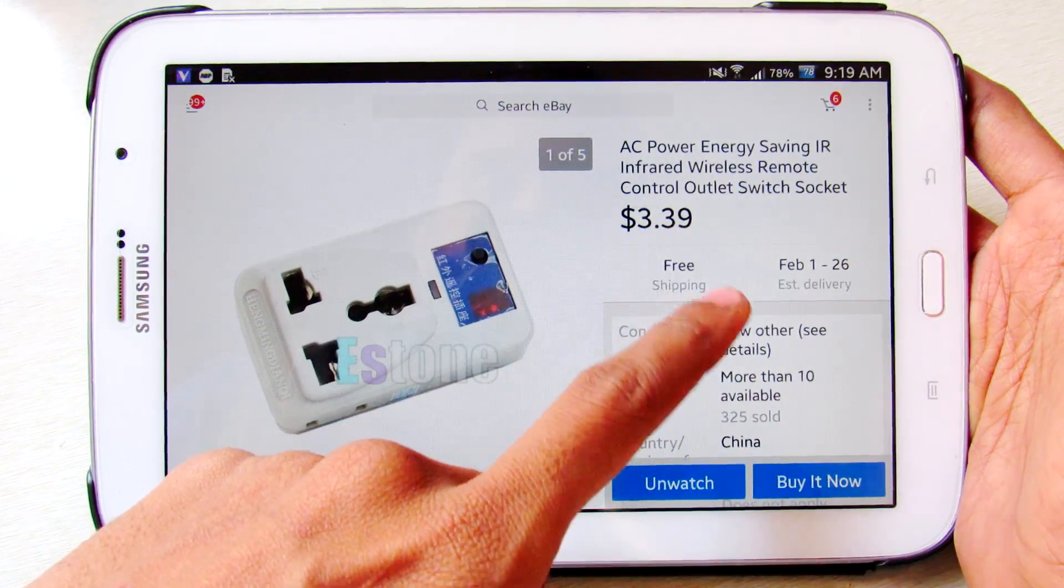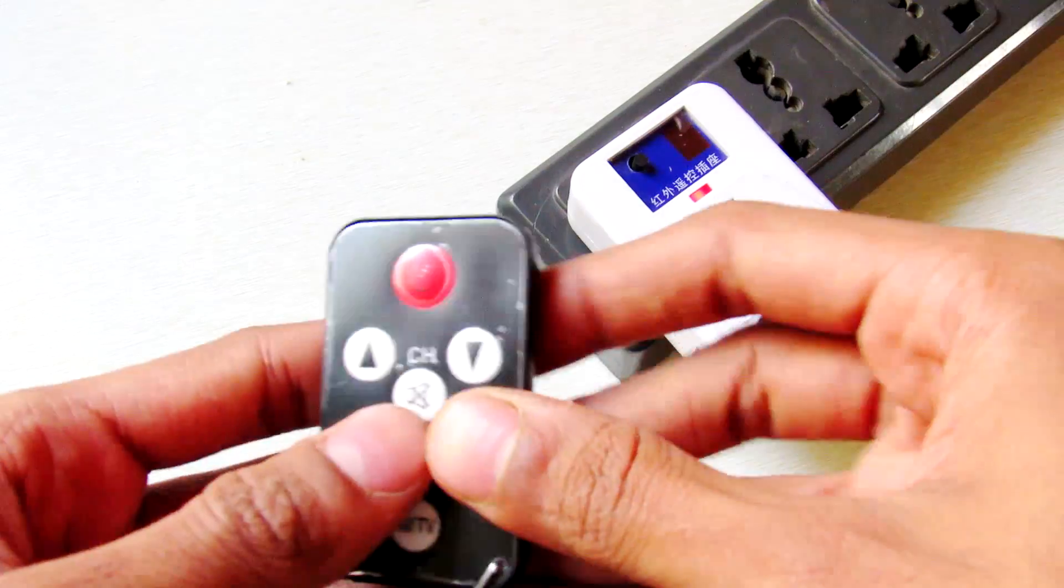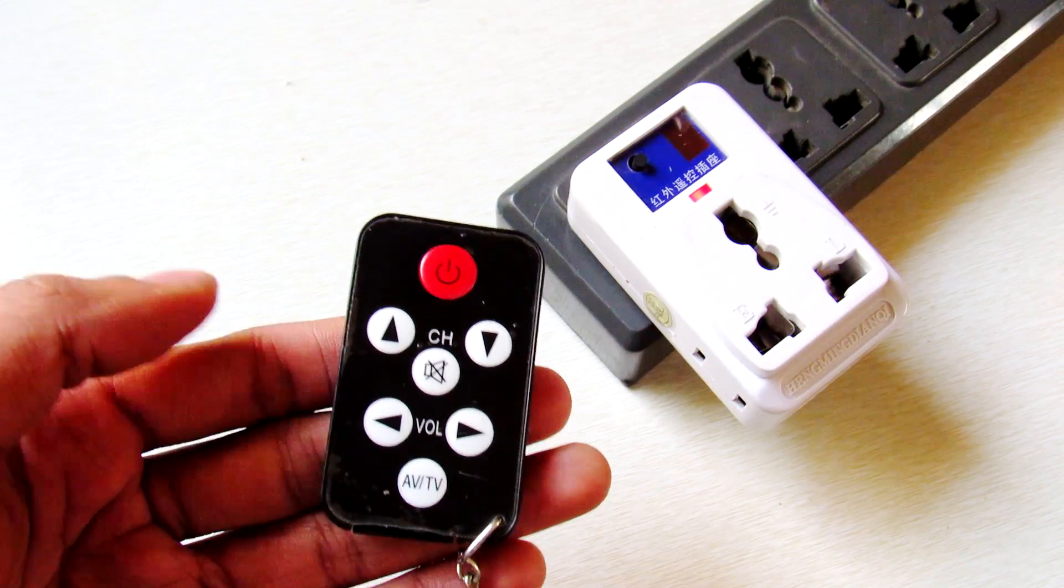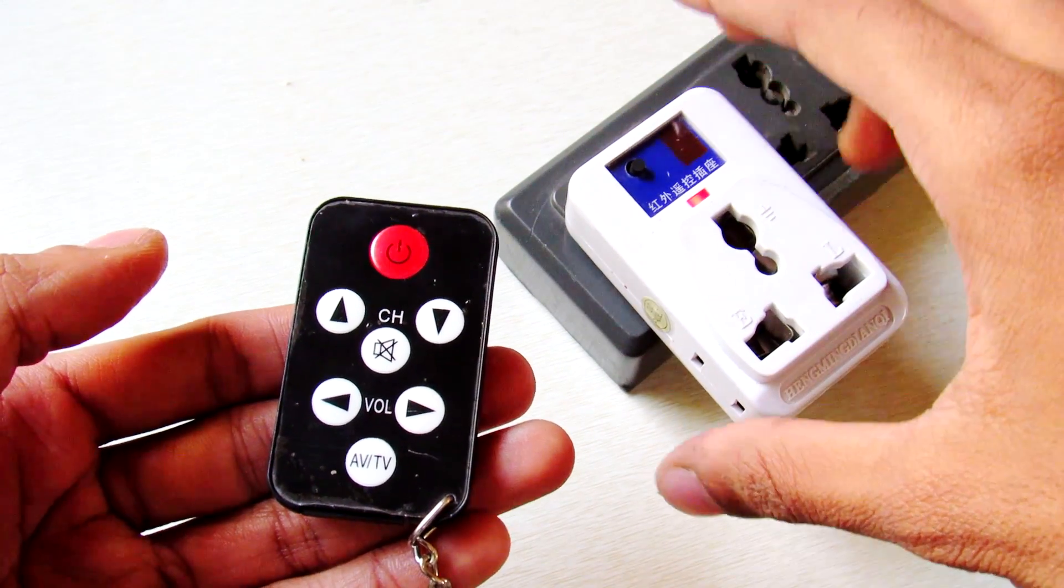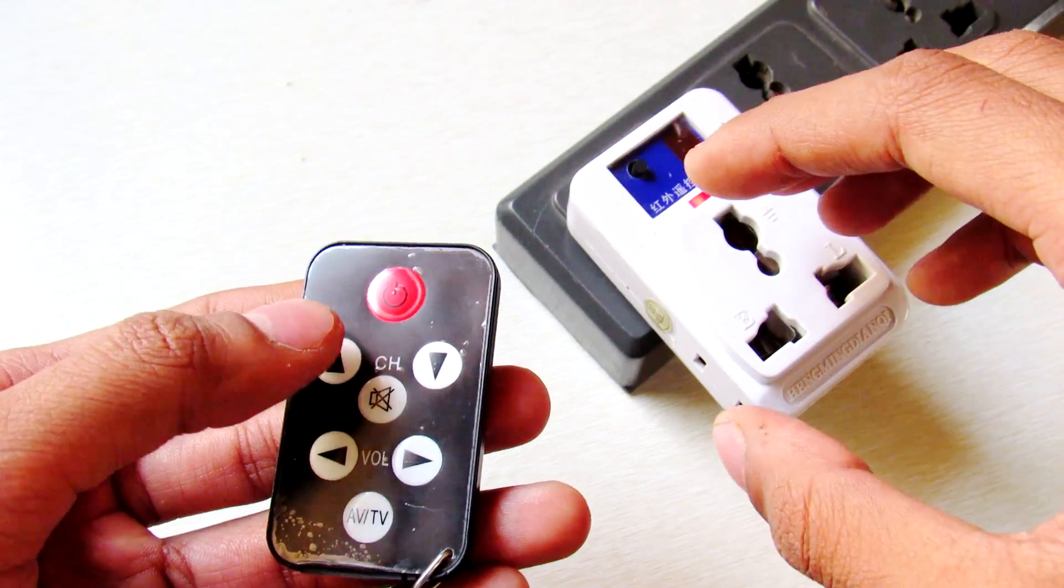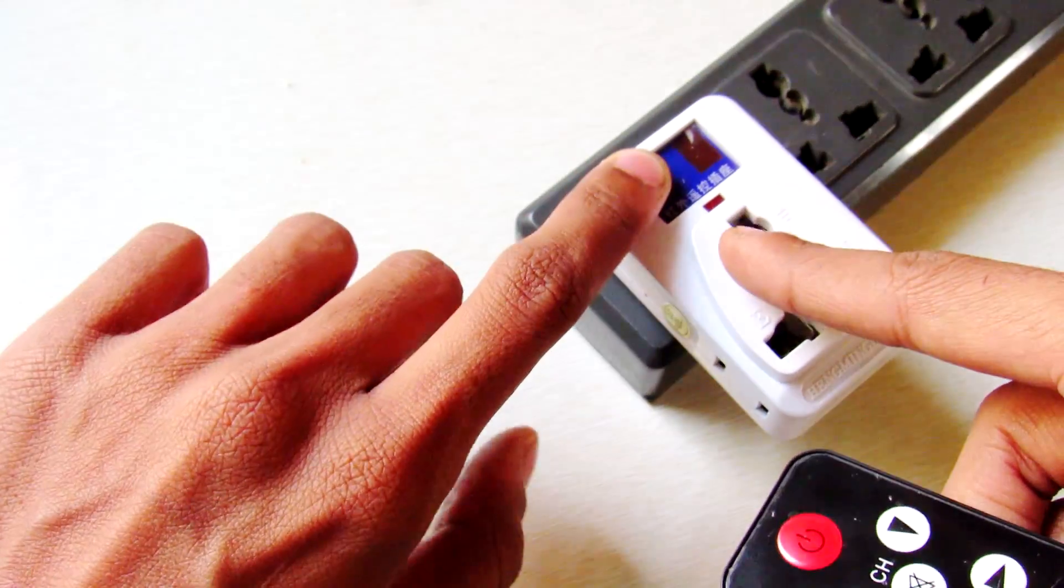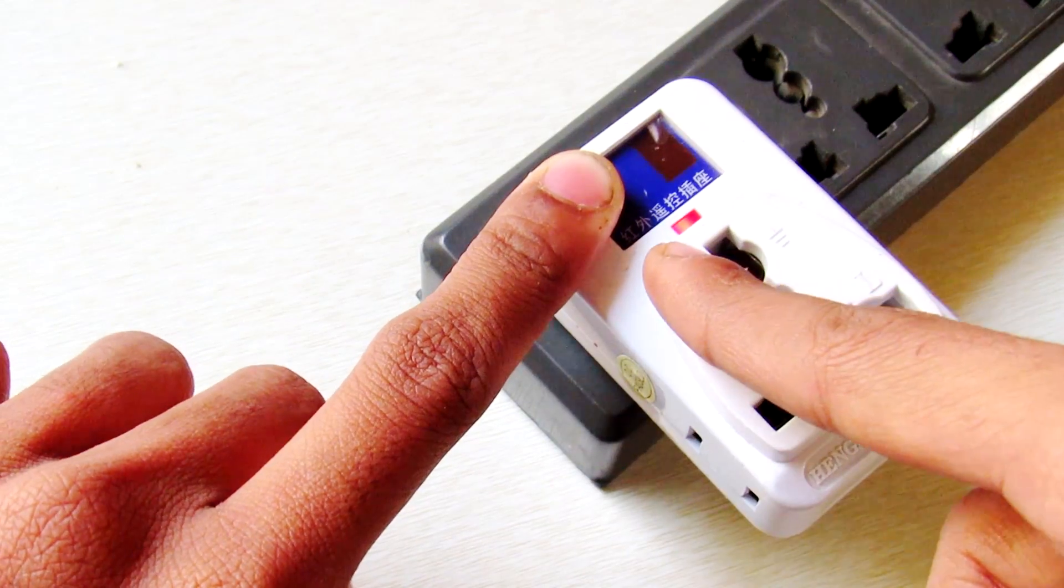Okay, right. So out of the box, this AC IR switch comes unprogrammed, so you have to program this to your specific remote control. For that, turn it on. You can see the red light is on, and then push the button for a few seconds.